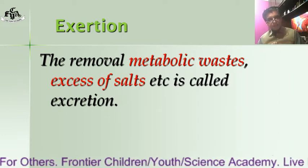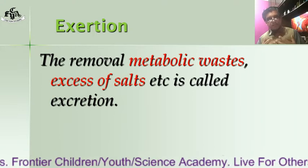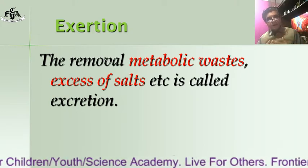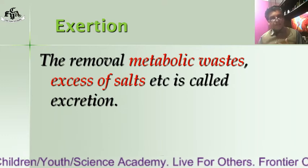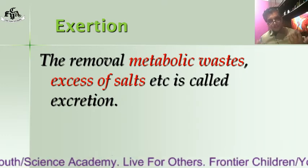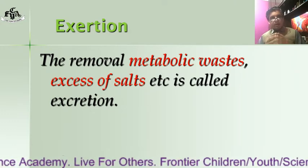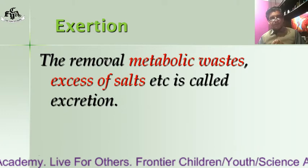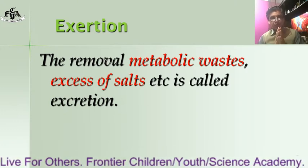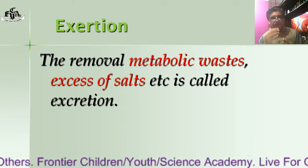Excretion is defined as the removal of metabolic waste from the body. For excretion there are systems in our body: the lungs are used for excretion of carbon dioxide, and the skin is used for excretion of excess heat and sometimes salts. In this chapter we will discuss the excretory system called the urinary system.